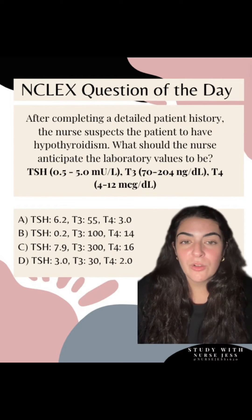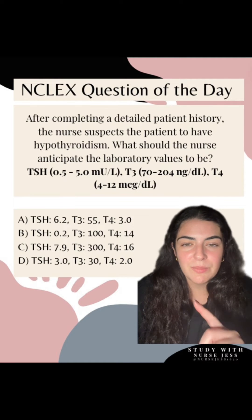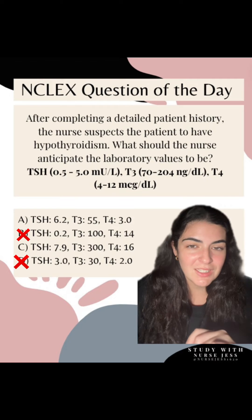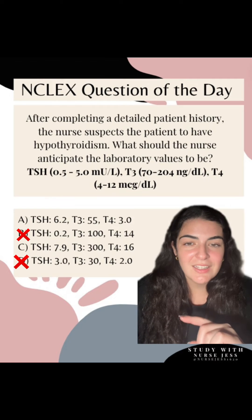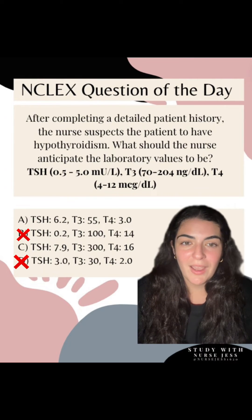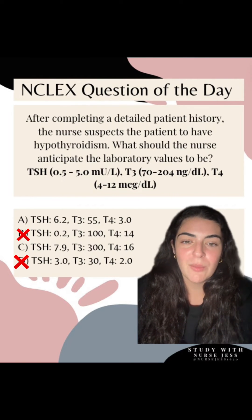Knowing that, I'm going to immediately eliminate options B and D, because B is a low TSH and D is a normal TSH. So I don't anticipate those values in hypothyroidism.